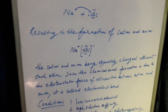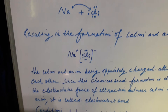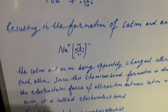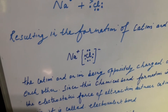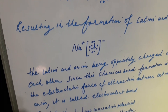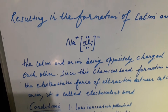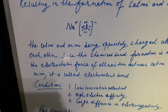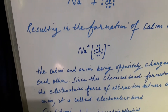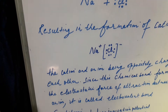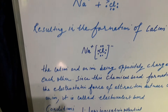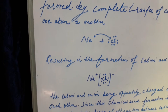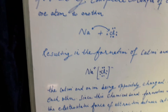The cation and anion, being oppositely charged, attract each other very strongly with the help of electrostatic forces. That is why this type of bond is called an electrovalent bond. This bond is formed by the complete transfer of an electron from one atom to another — normally from a metal to a non-metal.